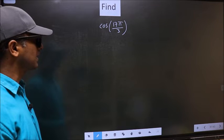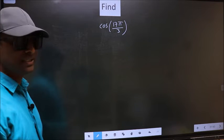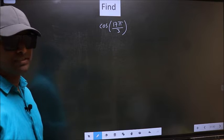Find cos 17π by 3. To find this, we should follow this method.